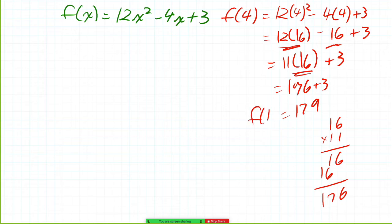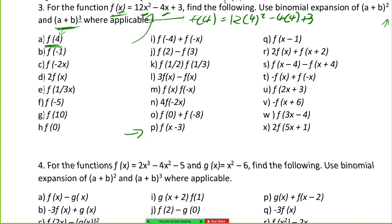179. So f(4) equals 179. A simple enough question. Let's jump forward a little bit more. Let's see if they have one that doubles up a little. We can jump back to this one here. It'll be a little trickier.